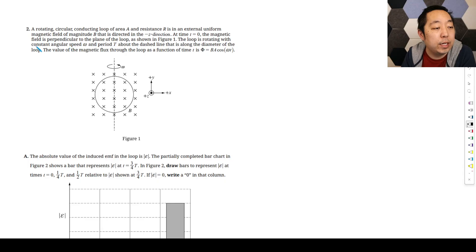We have a rotating circular conducting loop of area A and resistance R in an external uniform magnetic field directed in the negative Z direction. That's coming into the page because out of the page is the positive Z direction by this dot here. At time T equals zero, the magnetic field is perpendicular to the plane of the loop as shown in figure one.